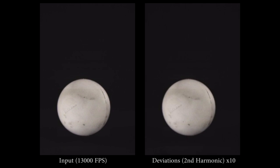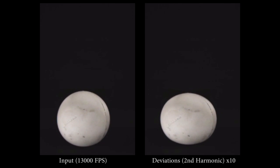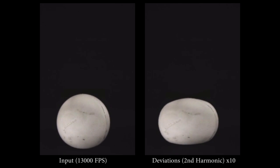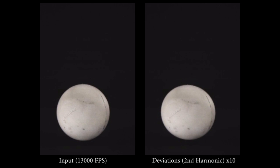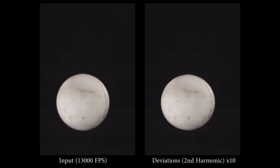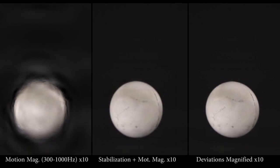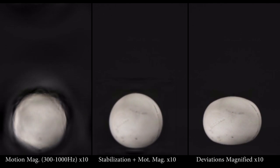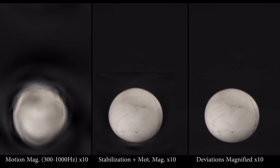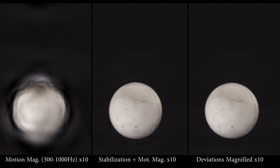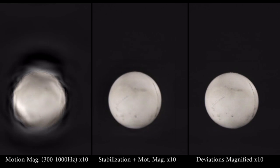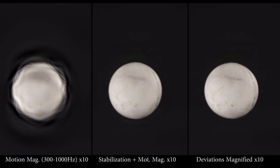In this example, we amplify the low frequency deviations of the ball from circular and do the processing independently in each frame. Now you can see the deformation due to impact and the vibrations of the ball afterwards. We compared motion magnification without and with stabilization. The stabilized result is similar, except at the moment of impact, which is not handled well by motion magnification due to the temporal discontinuity.